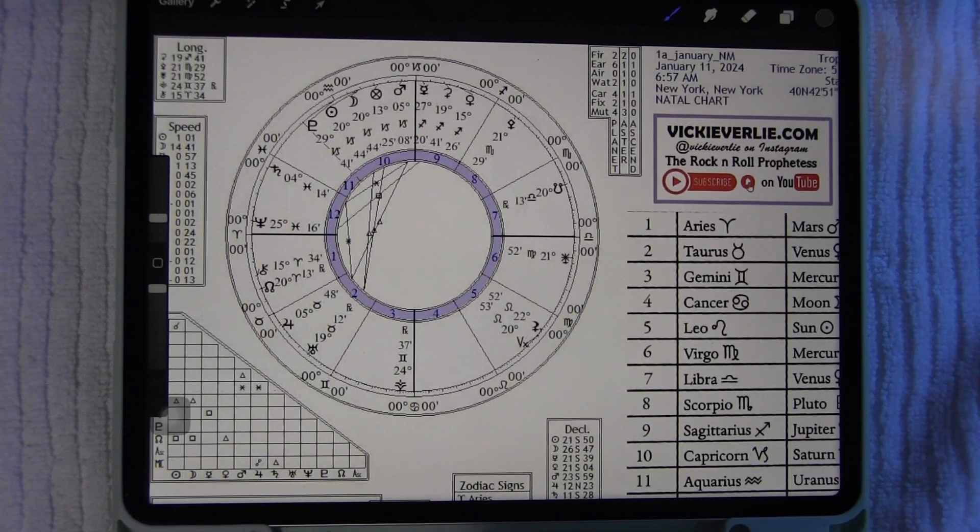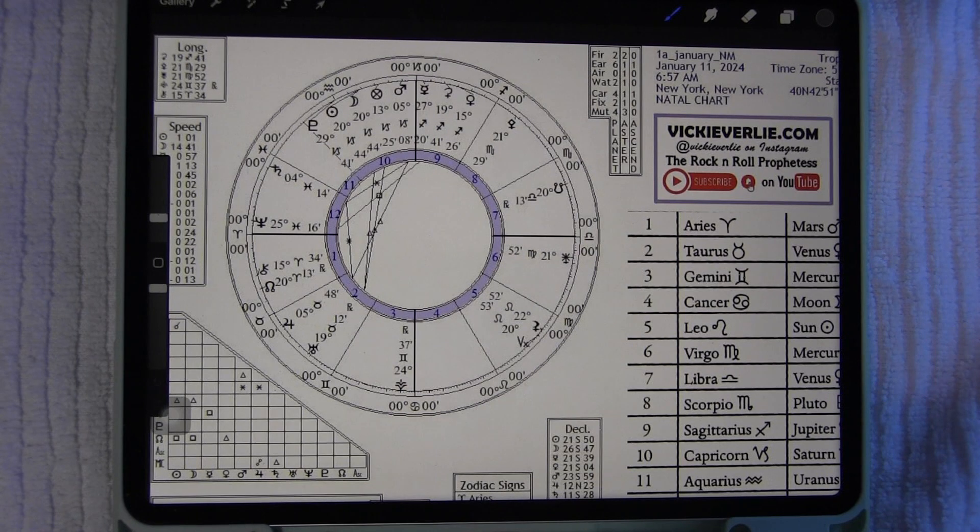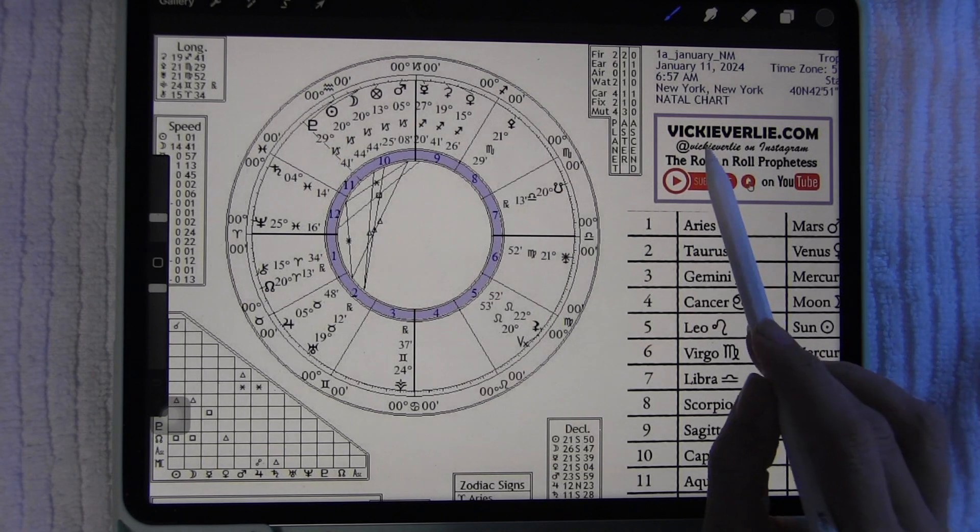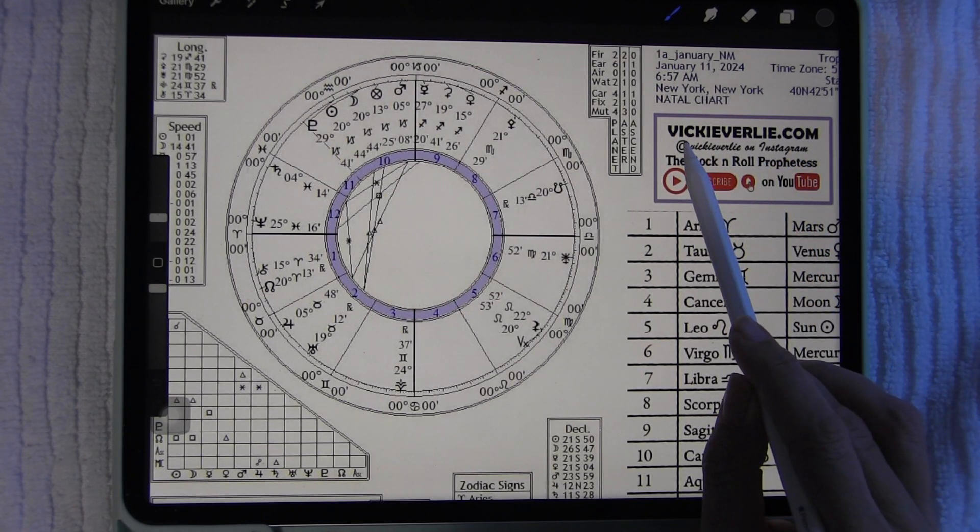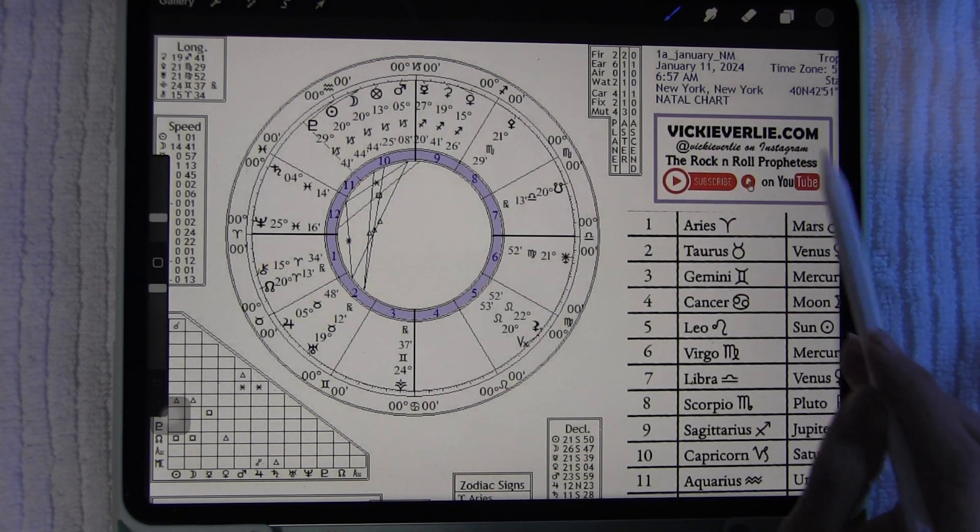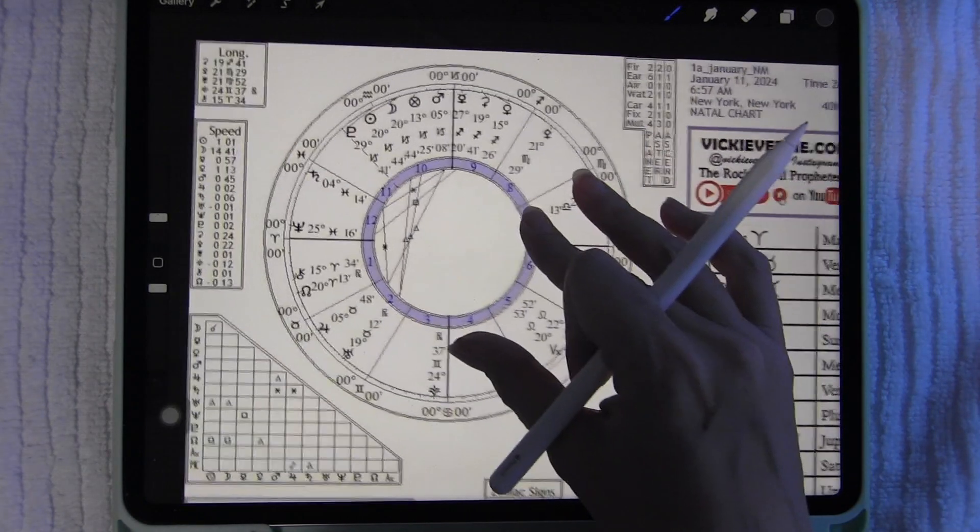Hello everyone, Vicki Verley here, the Rock and Roll Prophetess on YouTube. Today we're going to be looking at the very first new moon, the very first chart read for the year of 2024. It's happening on January 11th of 2024 in the sign of Capricorn. This is a psychic or intuitive reading. So while based in astrology, I do get psychic messages and downloads throughout the reading. I will never message you for readings or anything else. If you want to access me or anything of my services, you've got to go to my website. Beware of imposters, which are rampant on YouTube.